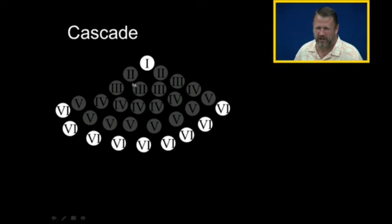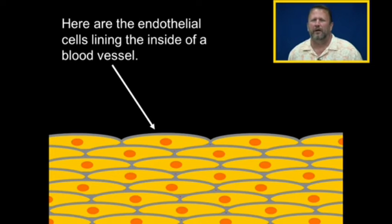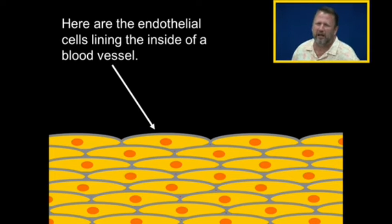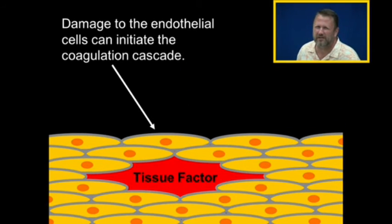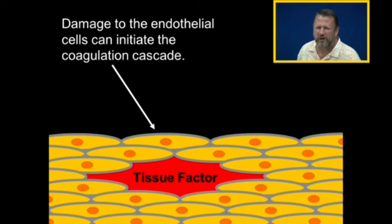And if we inhibit any one of these in the process, then this does not occur. Here is the endothelial cell lining inside of a blood vessel, and in this case there's damage to the endothelial lining, and this can initiate the coagulation cascade.